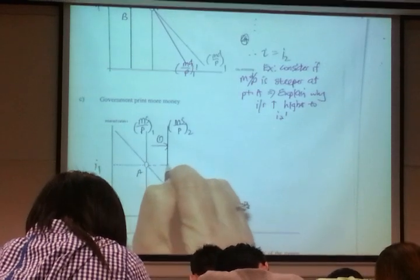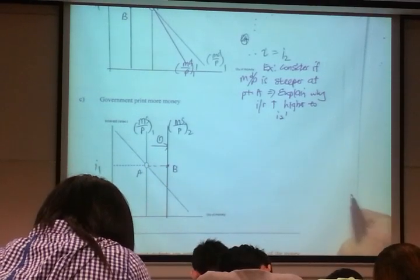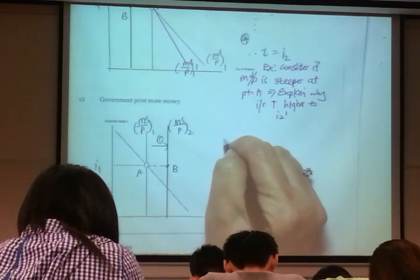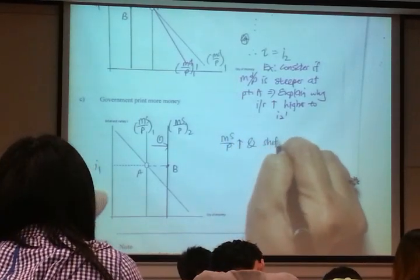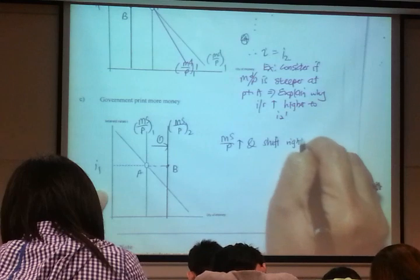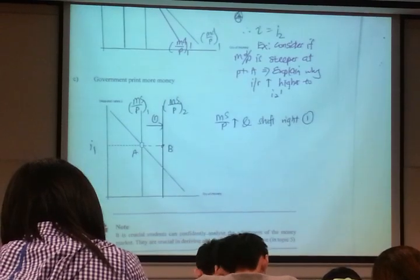So point A goes to point B. So supply increase and shift right. That was the standard step one.